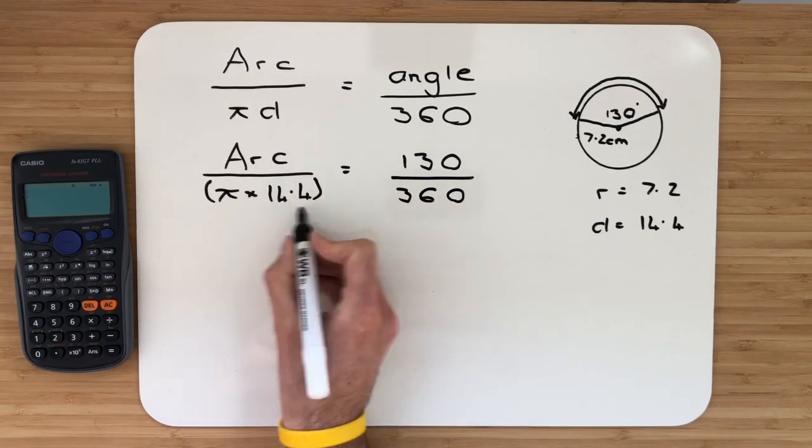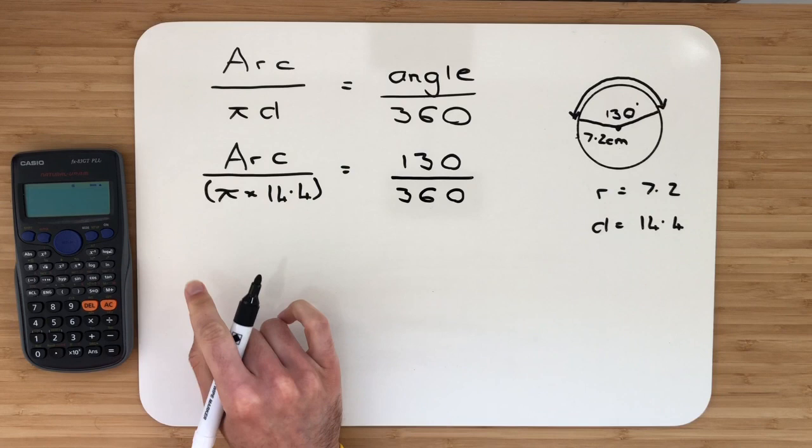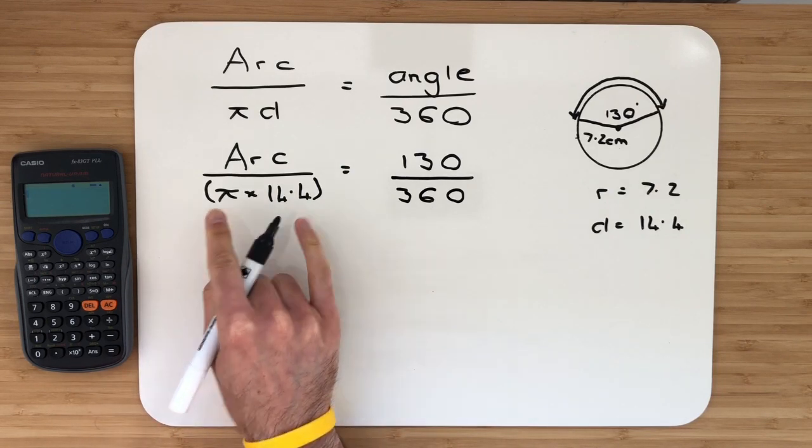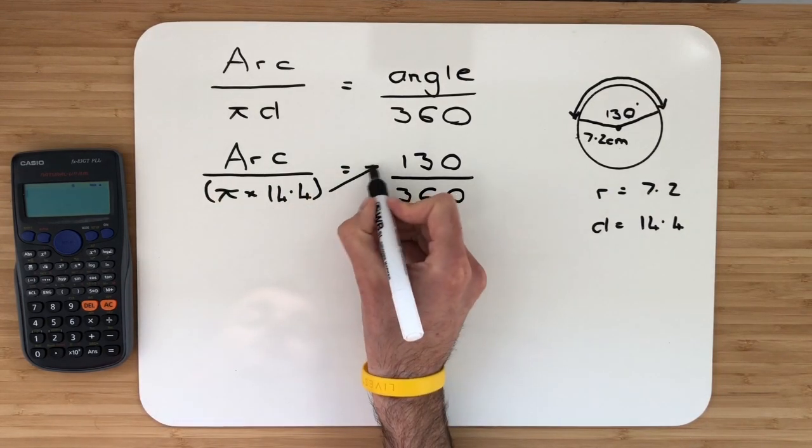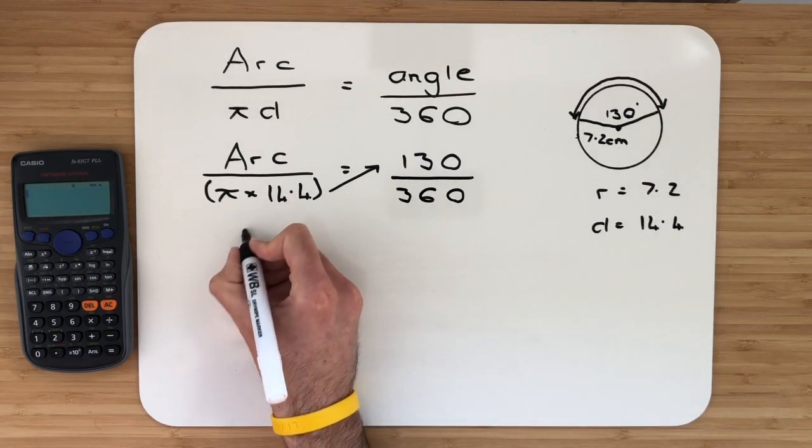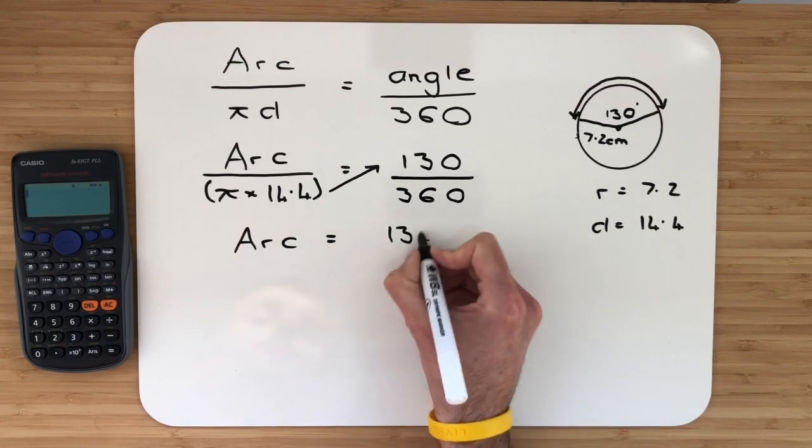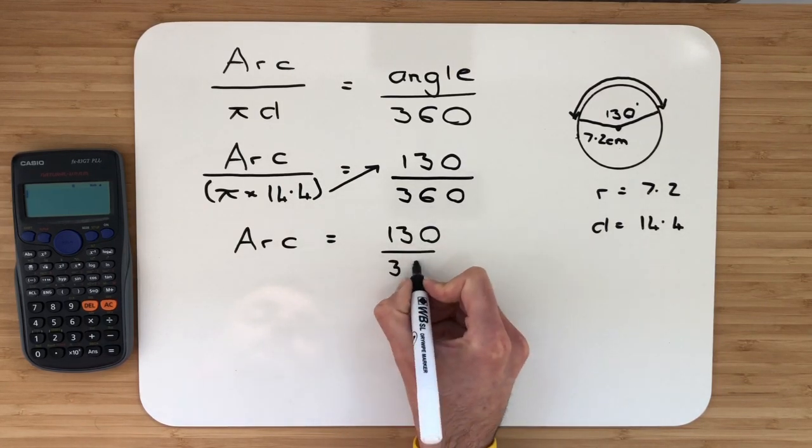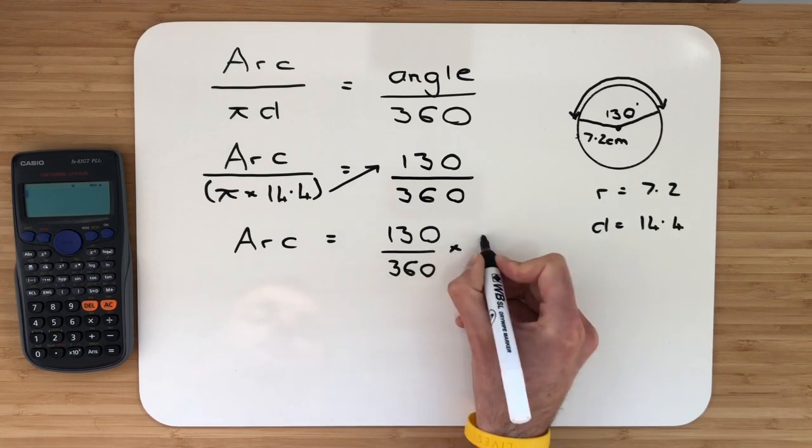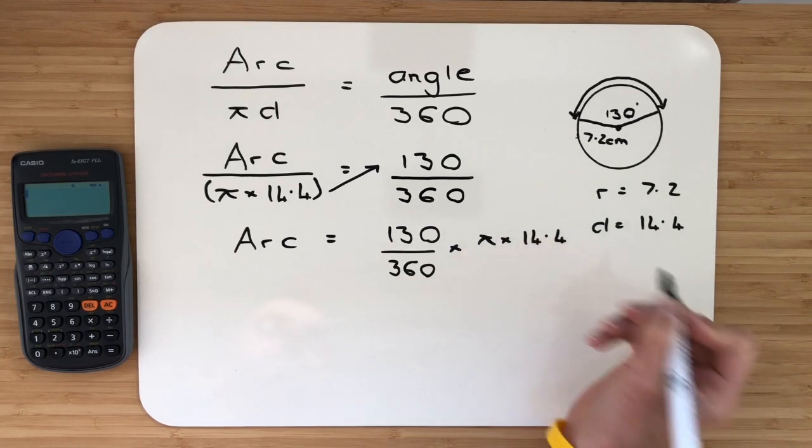Down the bottom of this fraction, the denominator, is pi multiplied by 14.4. We want to leave the arc on its own. Down the bottom, this is dividing, so let's draw in our arrow. When it goes over, it will multiply. Opposite side, opposite operation.